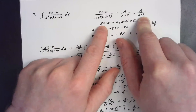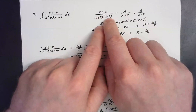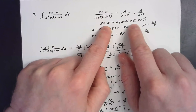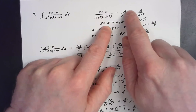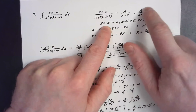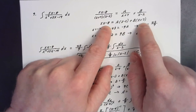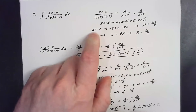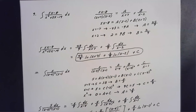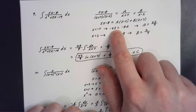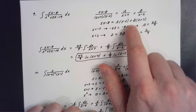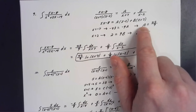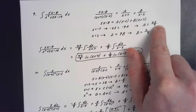When solving for A and B, multiply through by the least common denominator (x + 7)(x − 2) on both sides. The left-hand side becomes 5x − 8, and the right-hand side has A times (x − 2) and B times (x + 7). I solve for A by letting x equal negative seven: the left side gives negative 35 minus eight, which is negative 43. On the right, negative seven minus two is negative nine, so negative nine times A equals negative 43, giving A = 43/9.